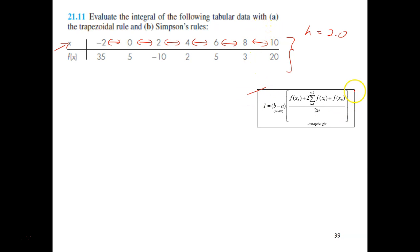And this is the formula for the multiple trapezoidal. Let's look how you're going to solve this for the a part. I integral equals to b minus a. So what is b here? a is negative 2, b is 10. So what is fx0? fx0 here is the first point, which is 35.